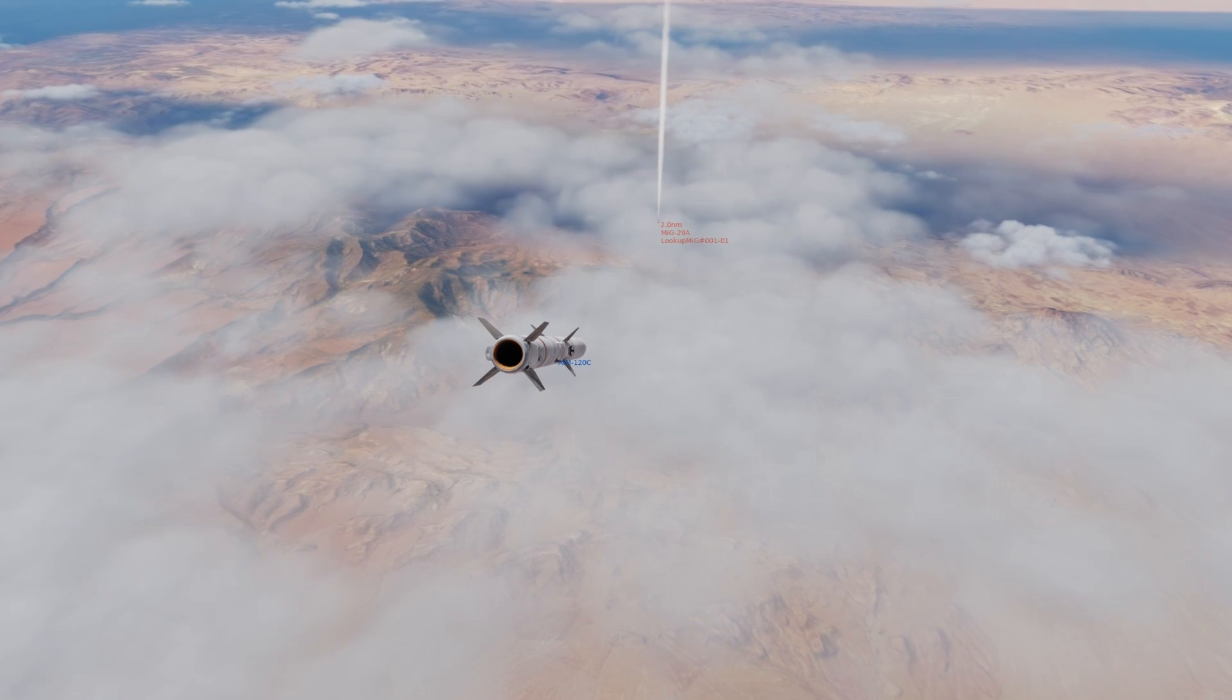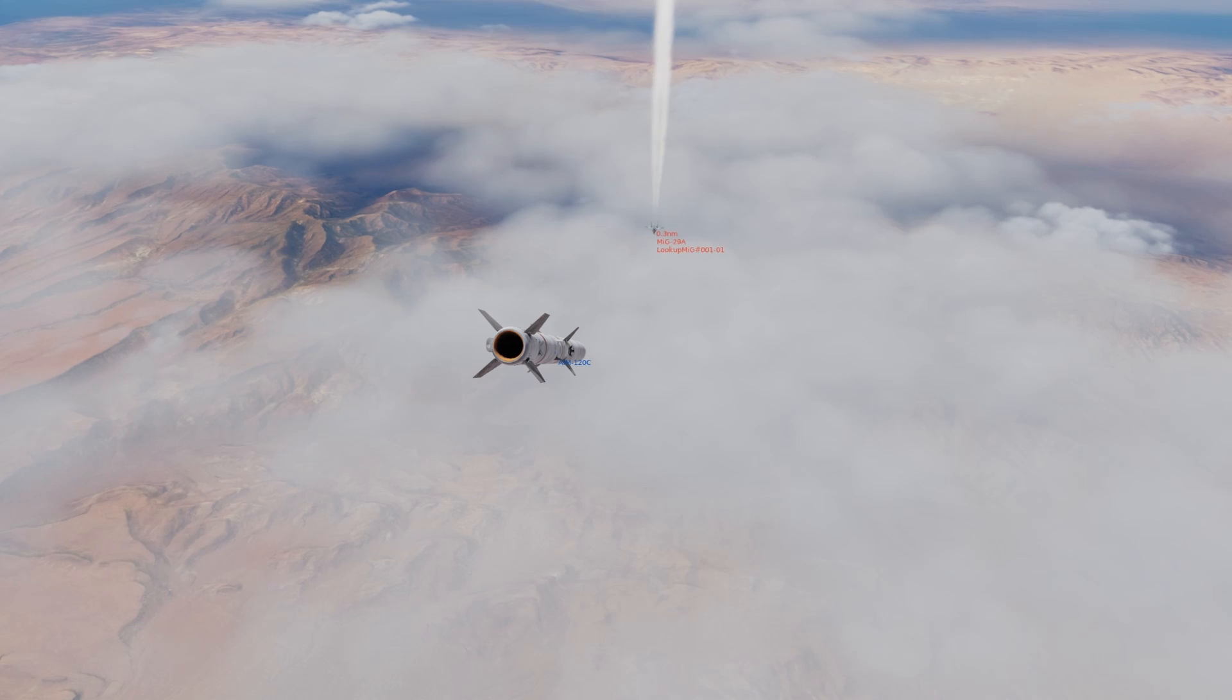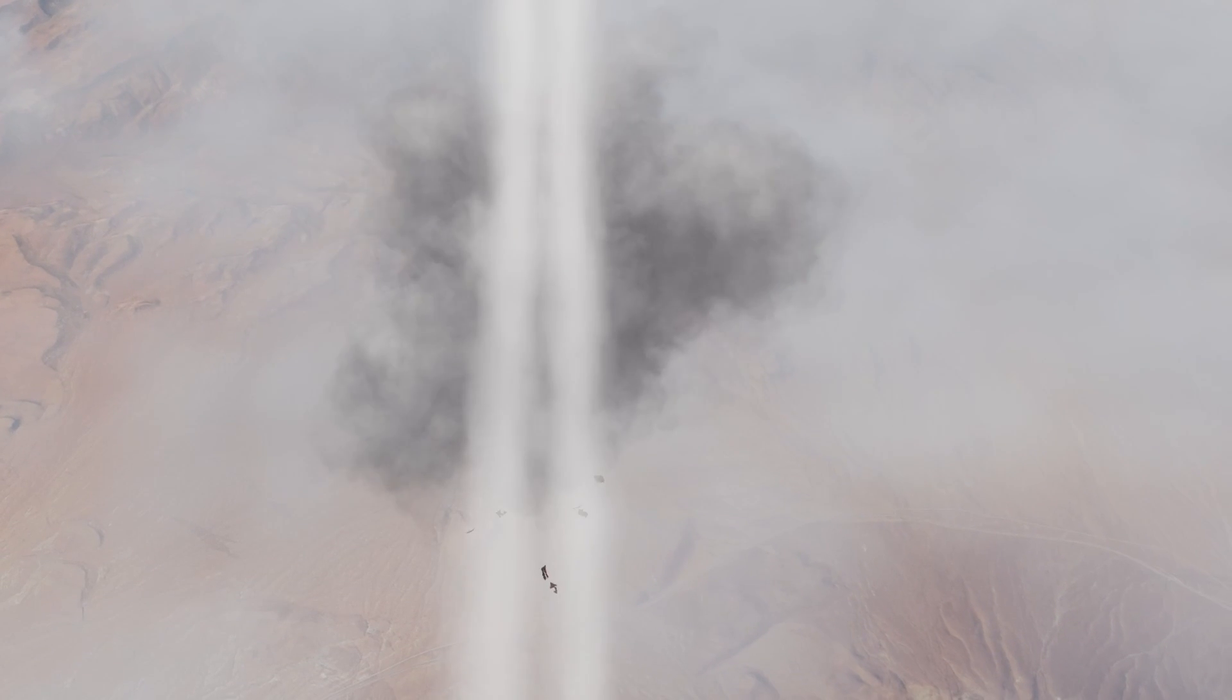Once it's near the target, it now has this nose-low profile where the missile is diving on its prey. With the assistance of gravity, it can do more maneuvering before it runs out of energy.